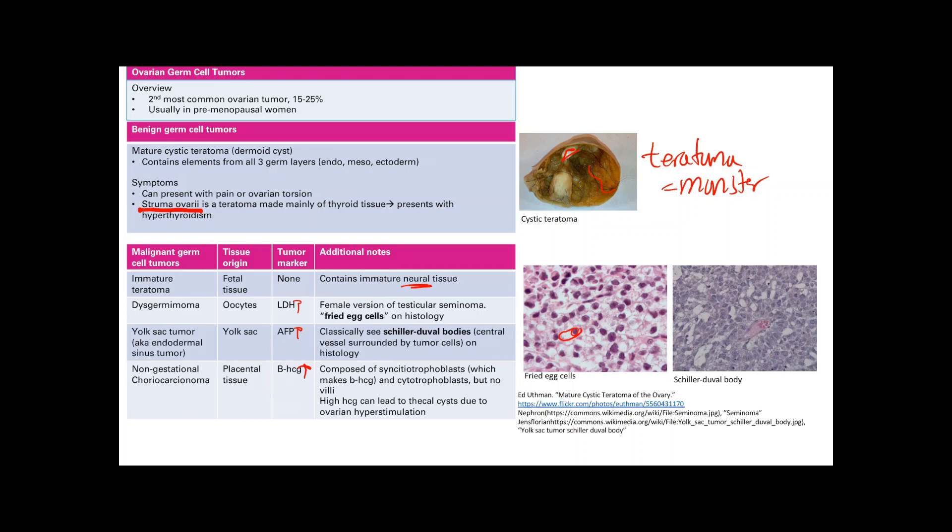This cancer is composed of syncytiotrophoblast, which makes the hCG, and cytotrophoblast. But there's no villi. Remember, these two are components of the placenta. This super high hCG that they make can lead to theca cysts due to the ovarian hyperstimulation.